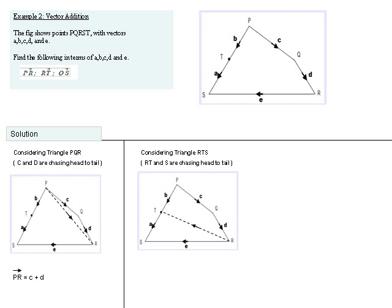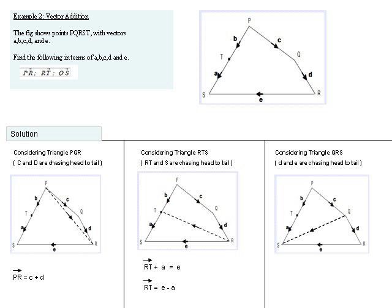To find vector RT, we use the same principle as before, where we identify the vector RT, and we observe the triangle RST. Now, note again that the two vectors that are chasing is RT and A, and that is going in the opposite direction to vector E. So, we can write the equation RT plus A is equal to E. Therefore, vector RT is equal to E minus A.